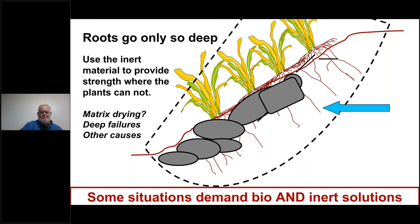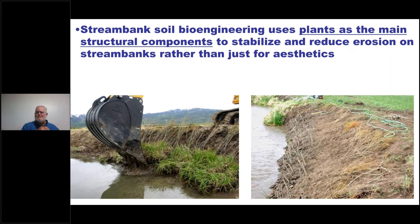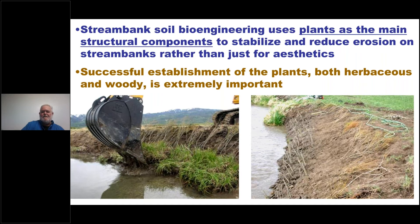Inert material is included in the definition because roots only go so deep. Sometimes you need rock, timber, or manufactured materials — especially with deep failures where you need bio and inert material combined. Remember that stream bank bioengineering uses plants as the main structural component to stabilize and reduce erosion, rather than just for aesthetics. If you don't get successful establishment of those plants, you typically won't be successful in protecting the bank.